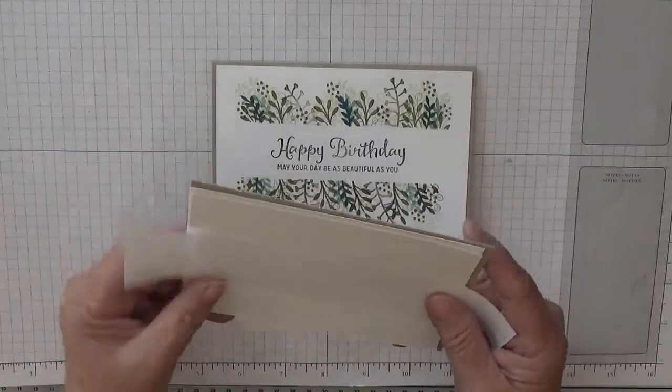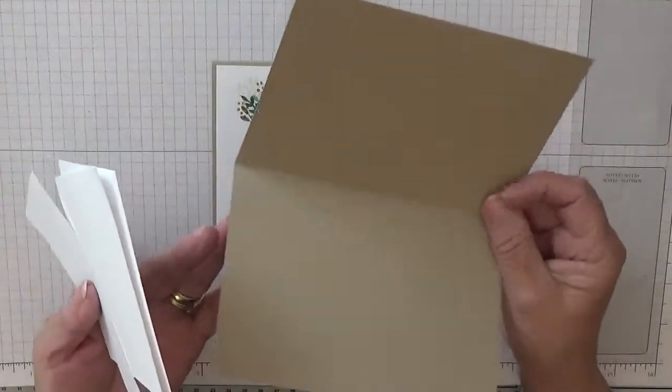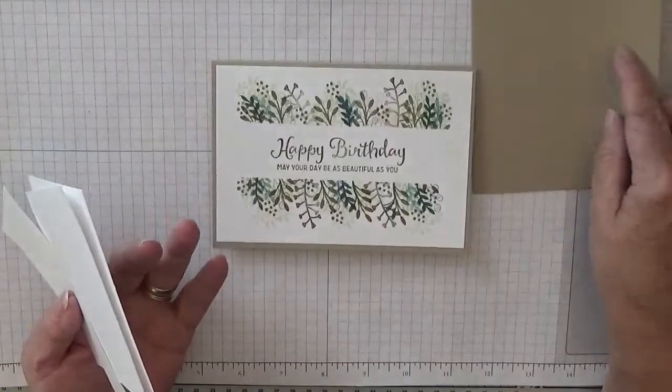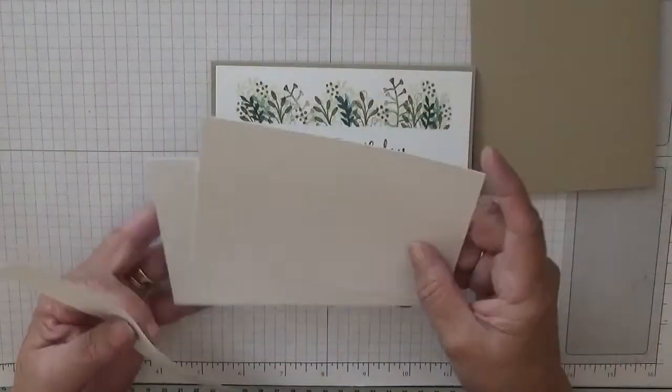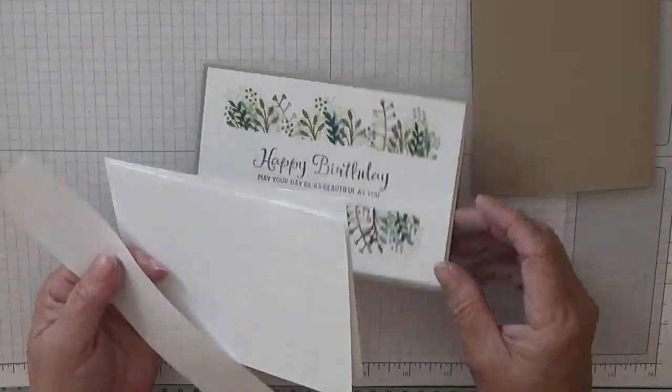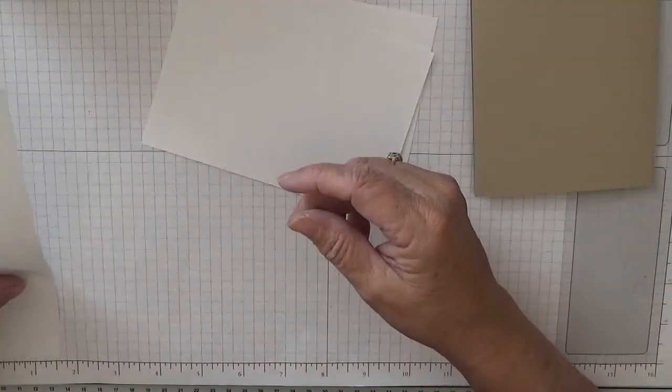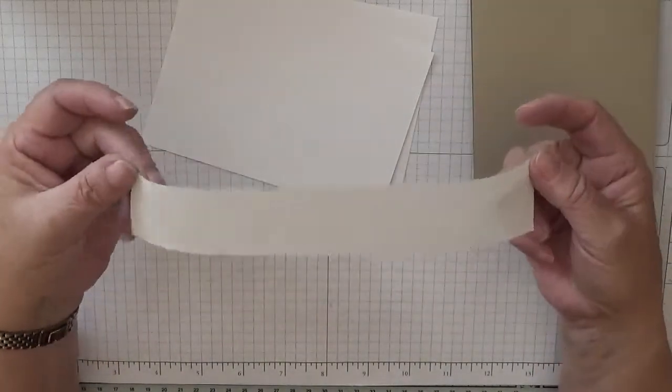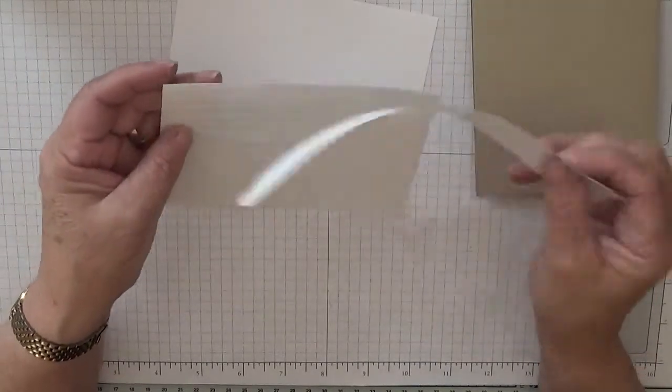I have mounted all the card pieces I'm using. I've got a Crumb Cake base card of eight and a quarter by five and seven-eighths, scored at four and one-eighth, folded in half and burnished. Two pieces of white, one for the inside and one for the outside. We're going to stamp on both. And a piece of copier paper at an inch and a half by the length of the notepad I took it from.